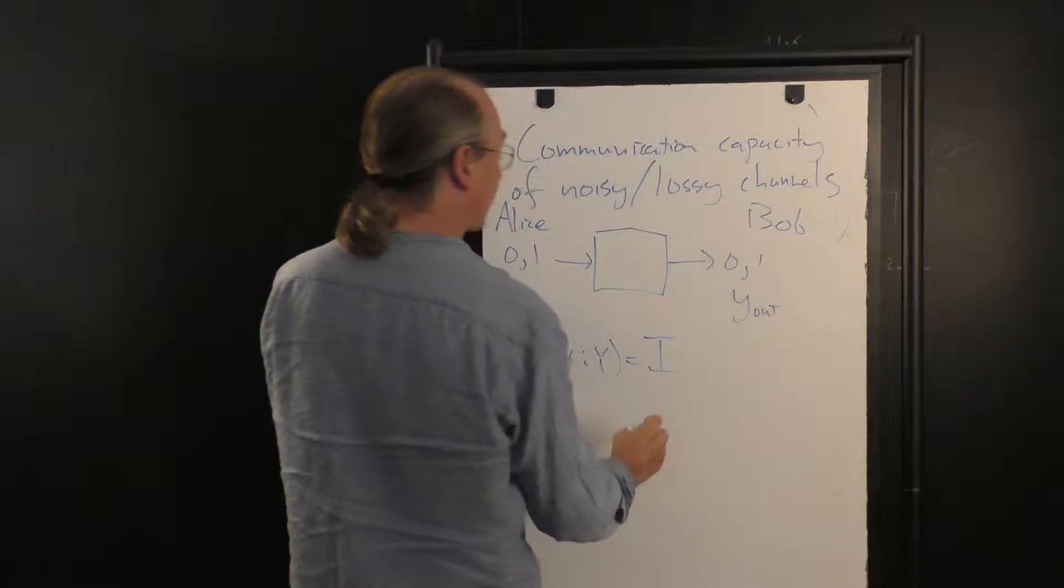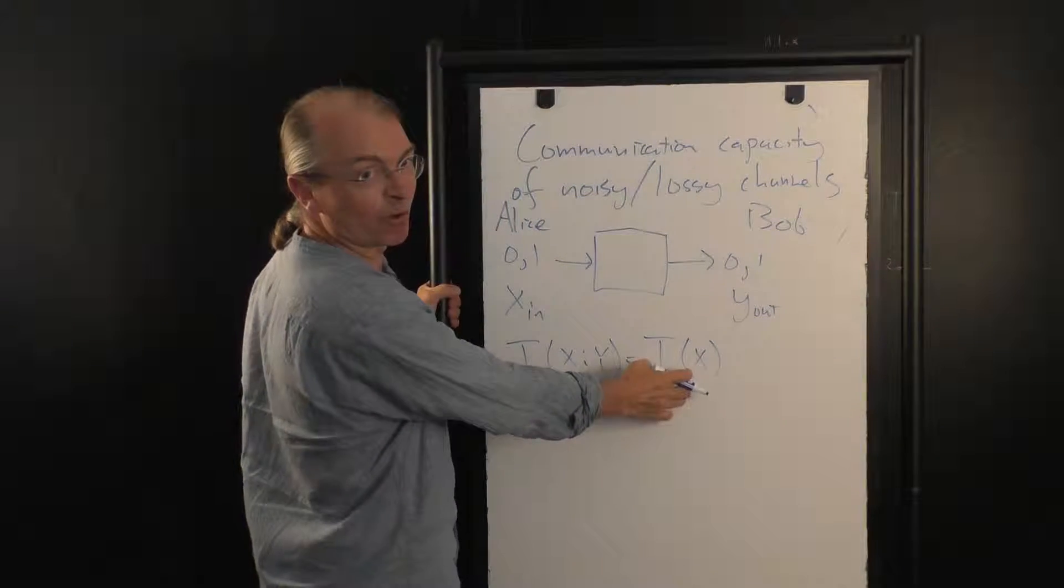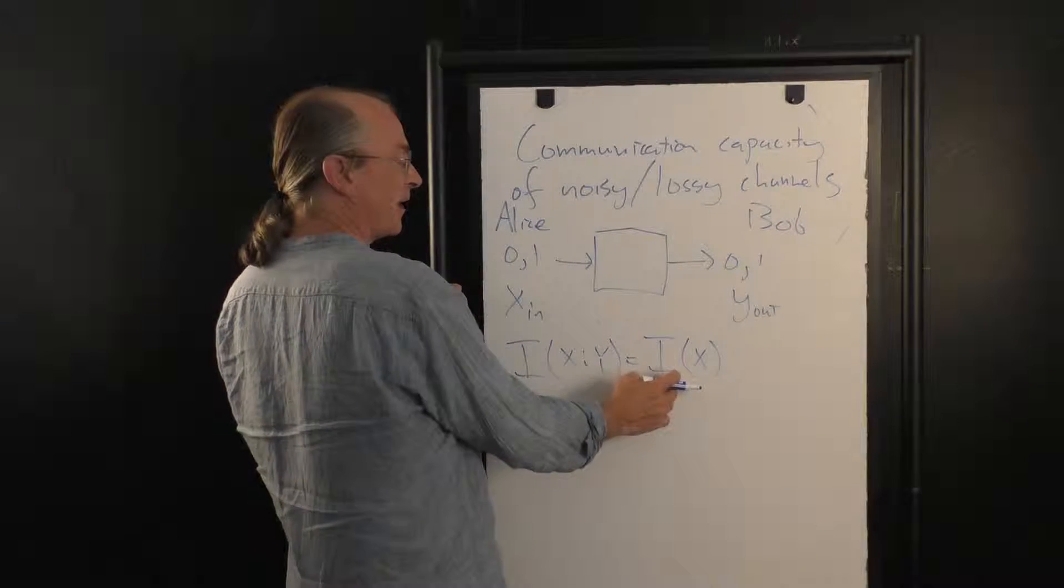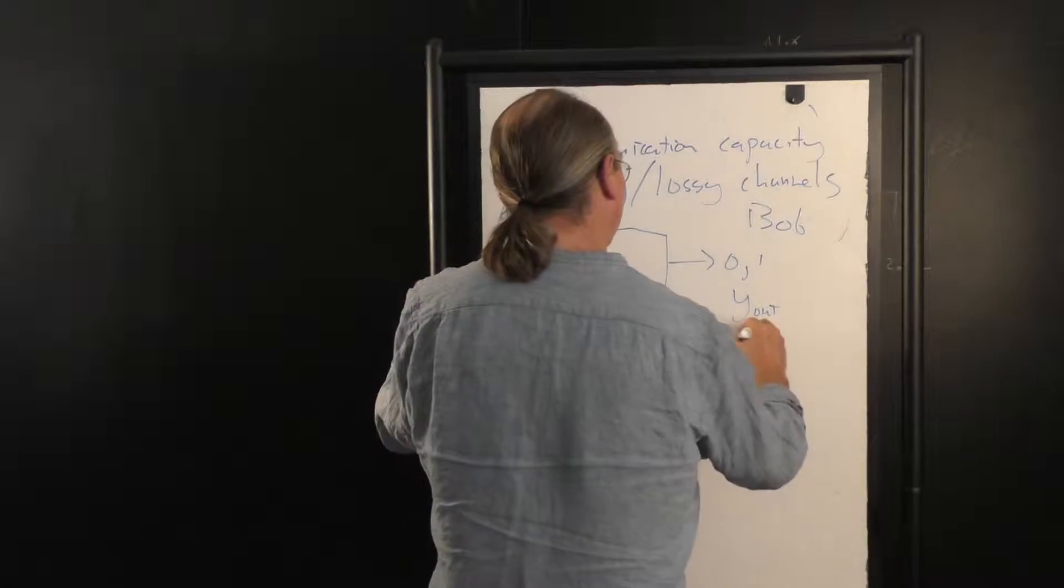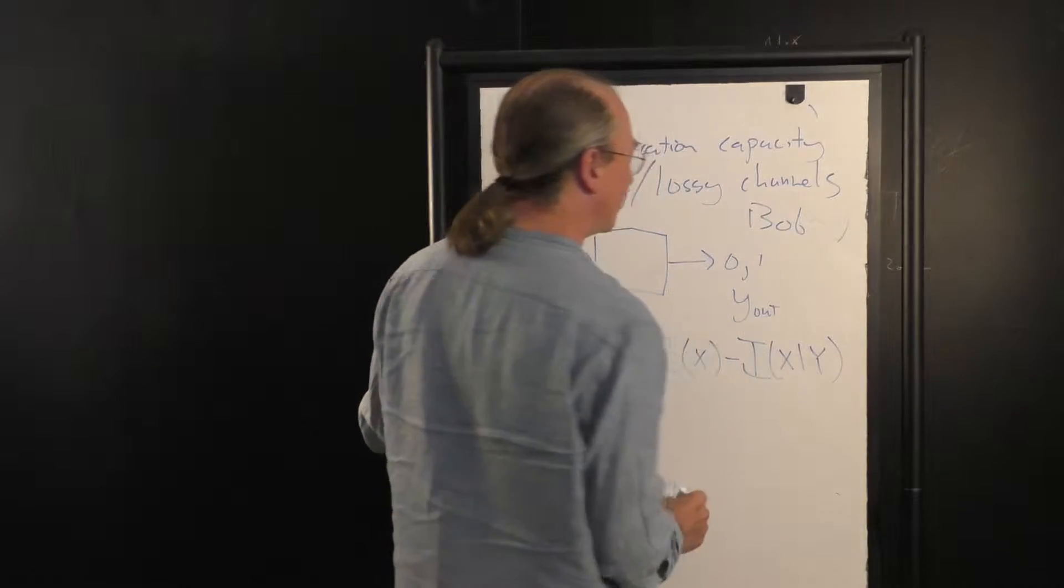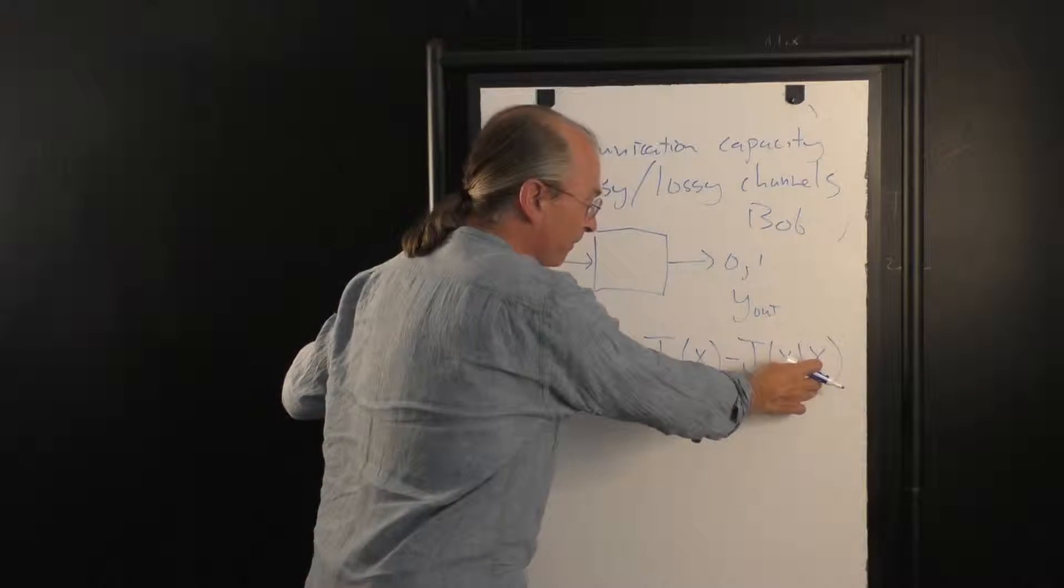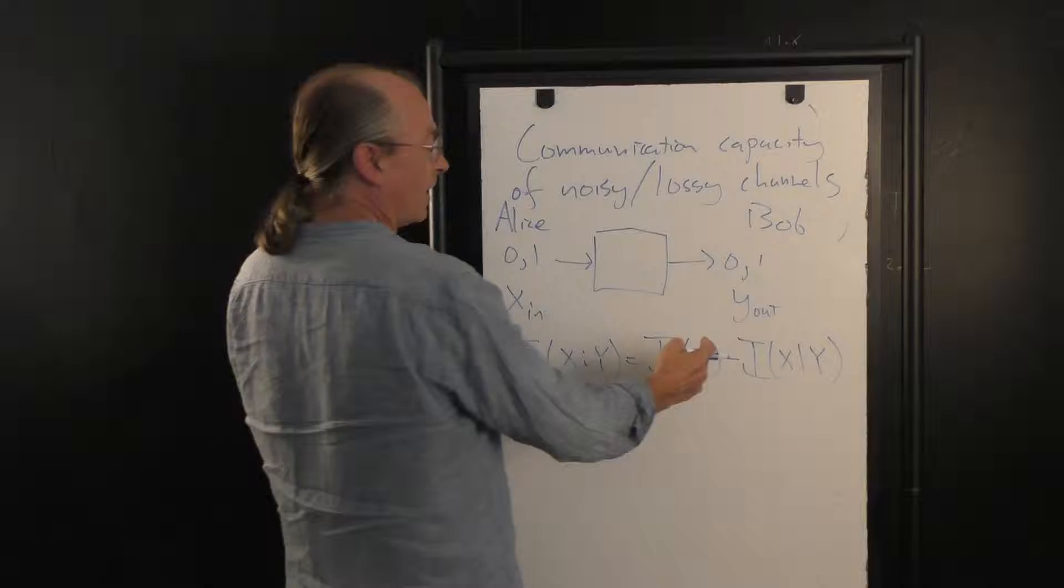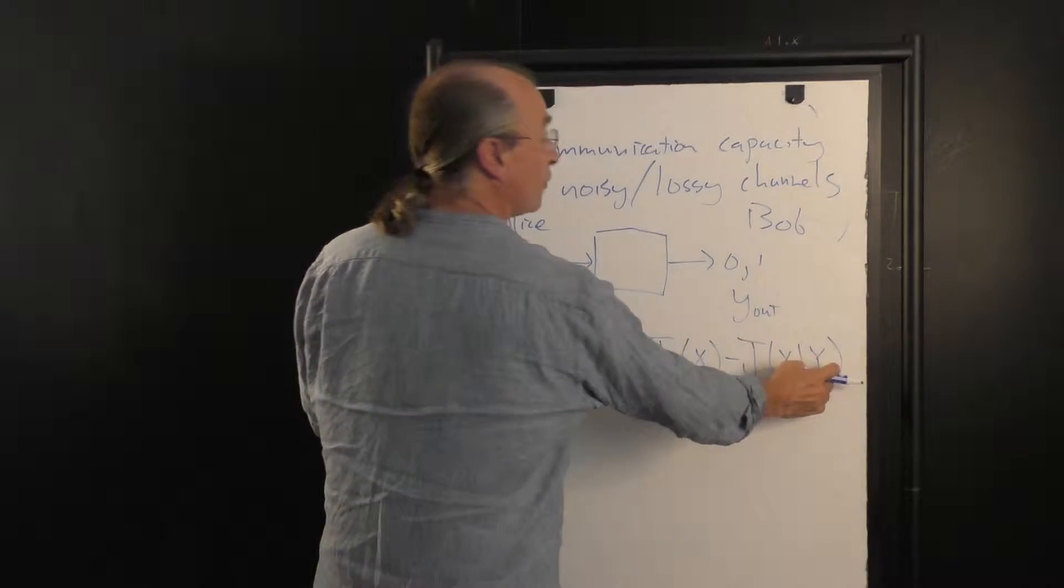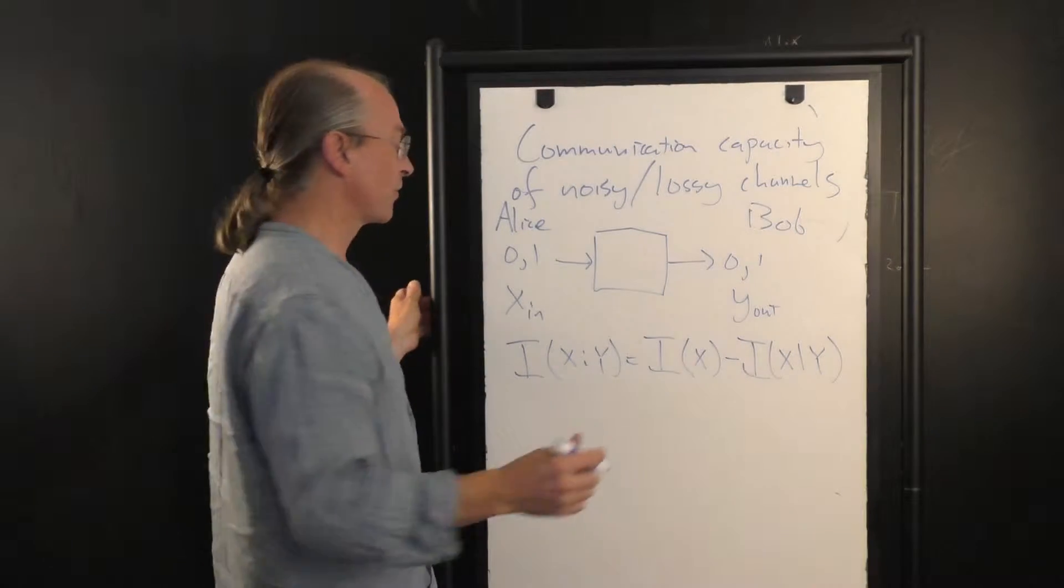There are several ways to write it down. A telling way is to say it's Bob's uncertainty about what went in before he receives the output. So this is the uncertainty about the input of the channel. But now here's the residual uncertainty about what went into the channel, given that Bob knows that a particular outcome came out of the channel. So this is the amount by which Bob's uncertainty about the input is reduced by finding out what came out, which is a good measure of the amount of information that goes down the channel.